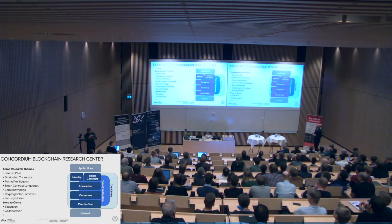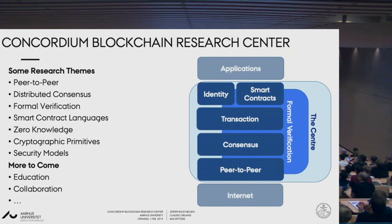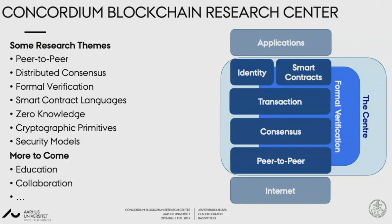To sum up what we've tried to say between the three of us: the research teams here at the Concordium Blockchain Research Center are working on peer-to-peer layer, distributed consensus, formal verification, smart contract languages, zero knowledge, cryptographic primitives, security models, and there's much more to come — for instance, education and collaboration with other projects and other universities. Thank you for your attention.